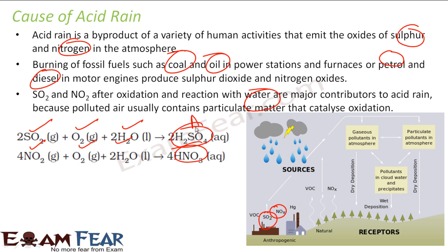And nitrogen oxides with oxygen and water give nitric acid. So the acids formed are nitric acid and sulfuric acid. We have sulfur oxides and nitrogen oxides from various human activities — gases that undergo reactions in the atmosphere with active catalysts. Here, wet deposition occurs because they react with water and form sulfuric acid. Sometimes the particulate pollutants in the atmosphere directly deposit sulfur and nitrogen, and that is dry deposition. So we have both wet and dry deposition.